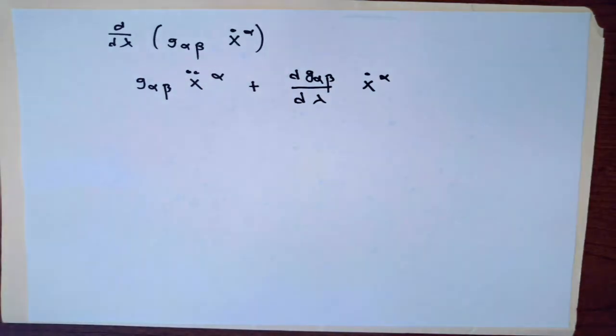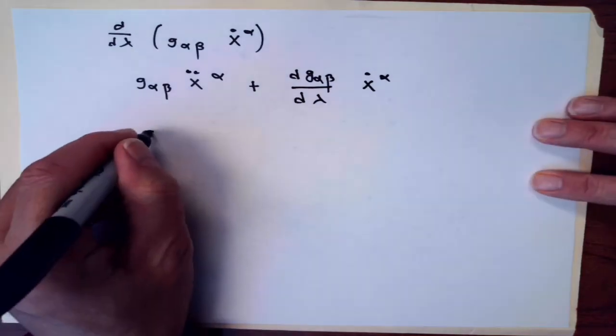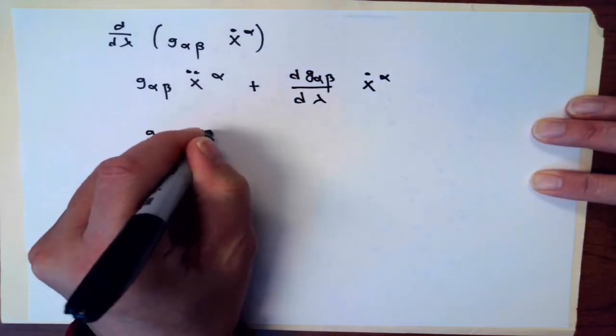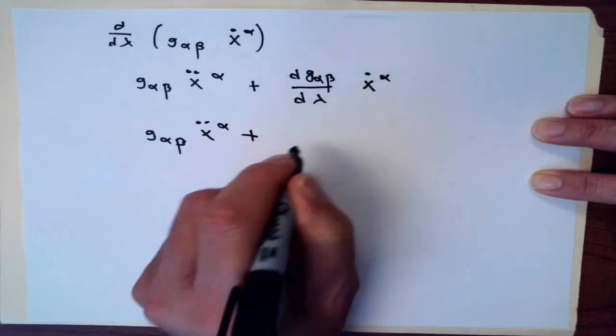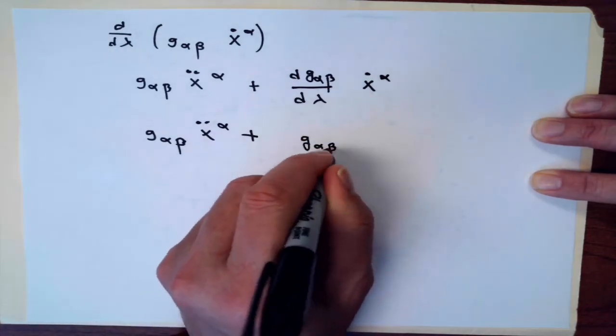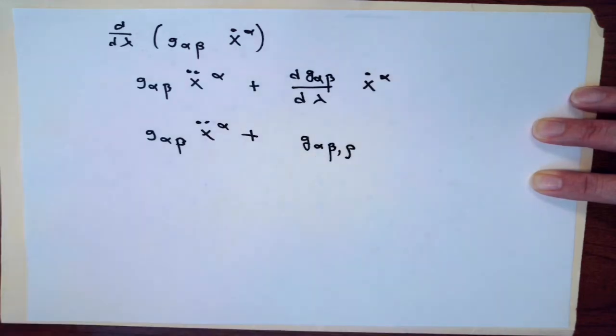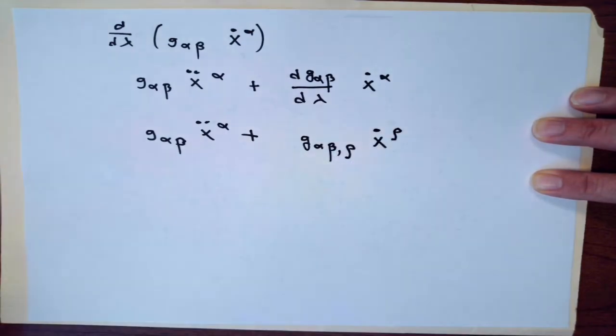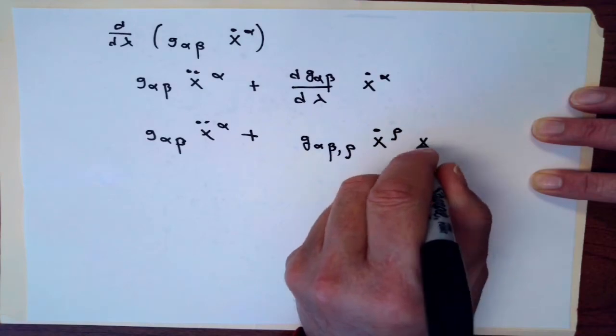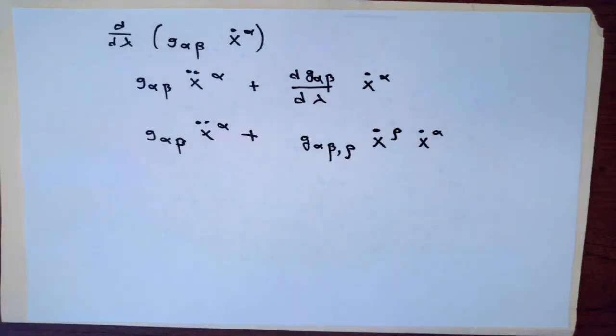This is g-alpha-beta times the second derivative of x number alpha, plus the derivative of g-alpha-beta with respect to lambda times x-dot-alpha. Generically, the components of the metric are functions of position only, not the parameter of a path that you're traveling along. So I'll rewrite that second term. According to the chain rule, this first factor is the partial derivative of g-alpha-beta with respect to x number rho times the derivative of x number rho with respect to lambda, and then don't forget the factor of x-dot-alpha.